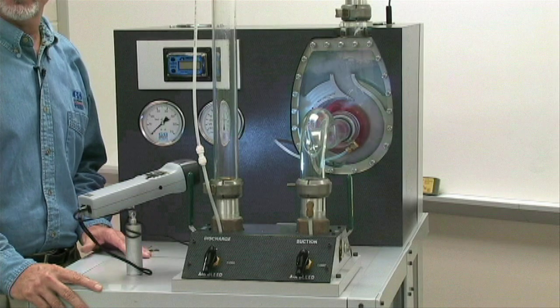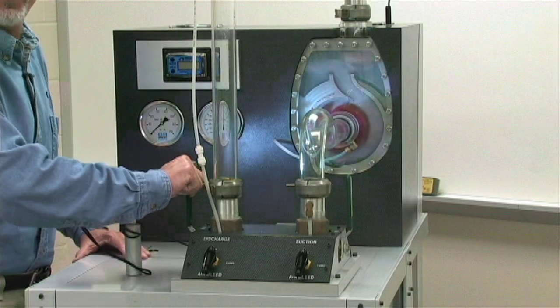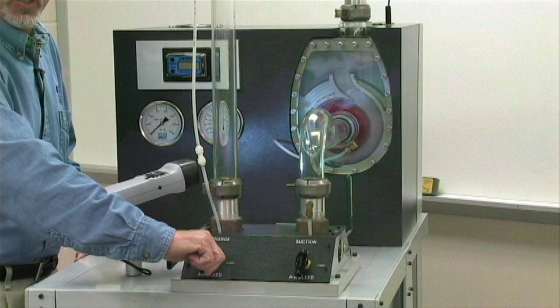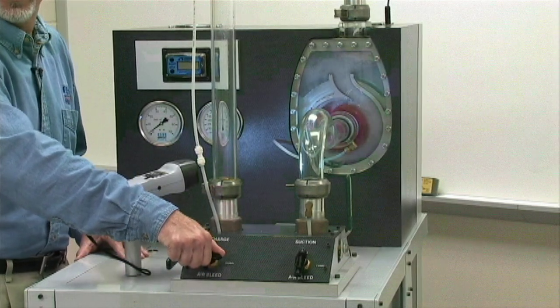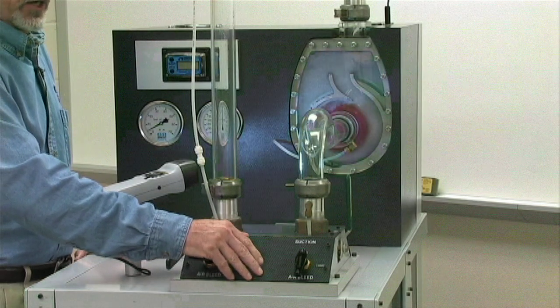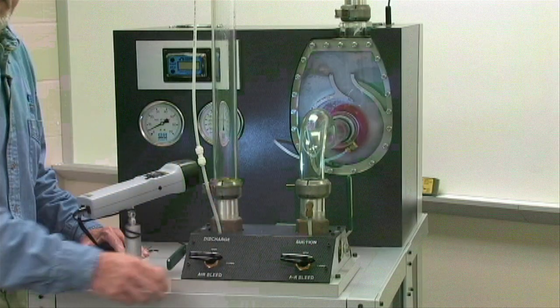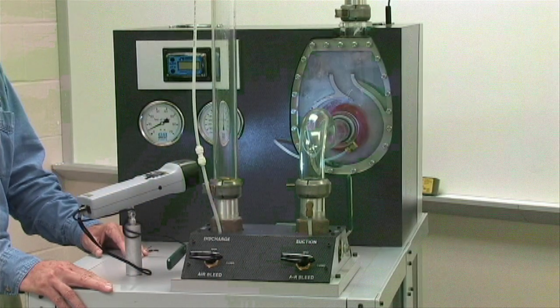Let's demonstrate this by closing off the discharge valve and closing off the air bleed line on the discharge side. By closing the air bleed line on the suction side, we will now allow the pump to attempt to prime, but it fails to do so due to air binding.